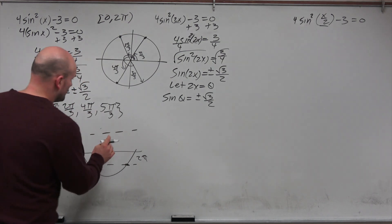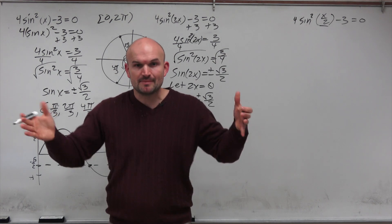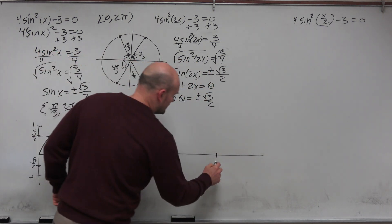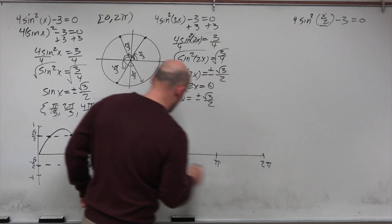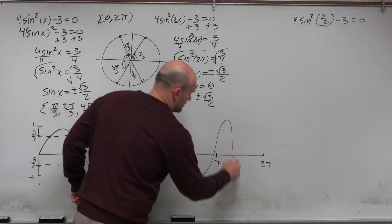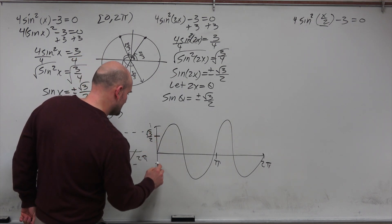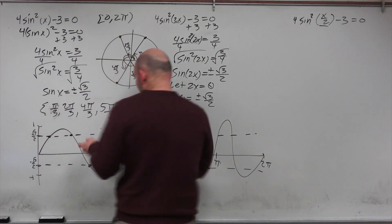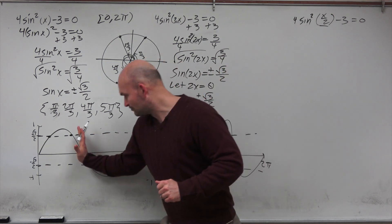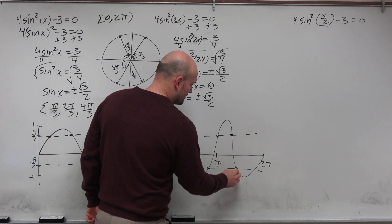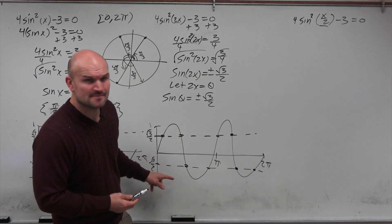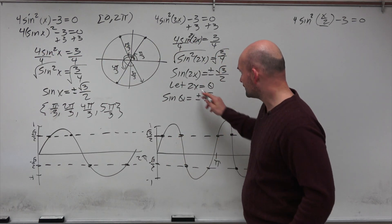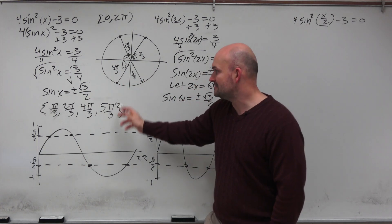When we have a double angle like 2x, it compresses the graph. The period changes from 2π to π, meaning two full periods fit within [0, 2π]. This doubles the solutions. The original four solutions still apply, but the graph compression creates four additional solutions. To find them, you can divide the original answers by 2, since you're solving for 2x, not x.